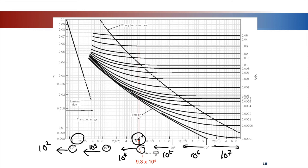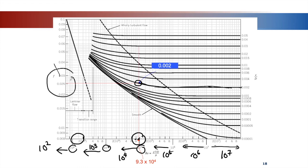Draw a vertical line upward at Reynolds number 9.3 times 10⁴. Your epsilon over D is 0.002, so you only consider that specific line — do not consider other relative roughness lines. Find the point of intersection of your vertical Reynolds number line with the epsilon over D equals 0.002 curve, then drag horizontally to read the friction factor value.